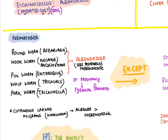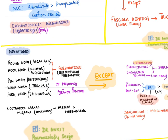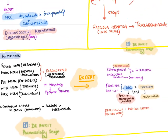For all trematodes (flukes), praziquantel is the drug of choice: lung fluke (Paragonimus), schistosomiasis (blood fluke/bilharzia). Exception: Fasciola hepatica (liver fluke) uses triclabendazole. For nematodes, albendazole is the broad-spectrum drug of choice: ascariasis, hookworm (Necator/Ancylostoma), pinworm (Enterobius vermicularis), whipworm (Trichuris), trichinella. Mebendazole is less preferred but more preferred in pinworm and pork tapeworm.